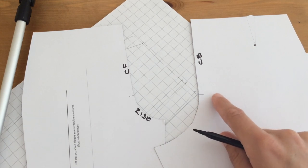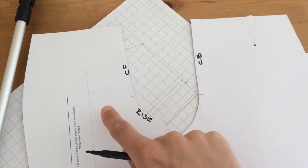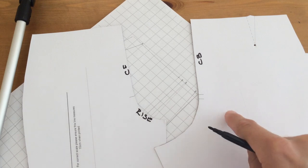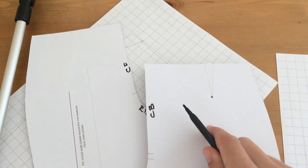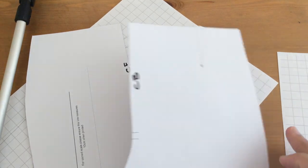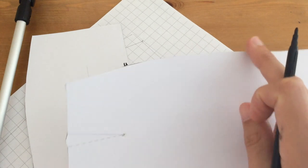The back has two notches because that's just pattern cutting code for front and back: one for the front, two for the back. Then here we have a dart about midway through, and side seams with a curve for the hip.